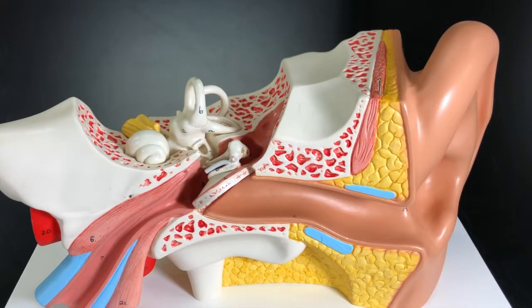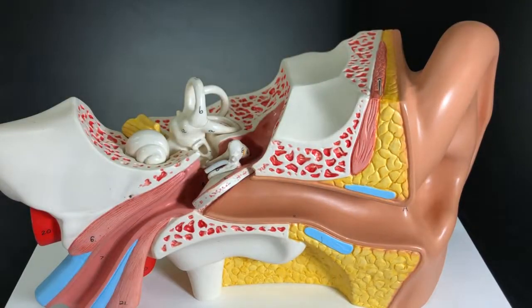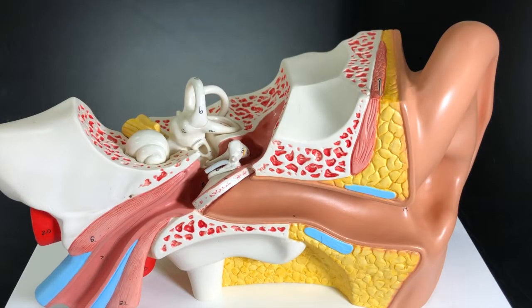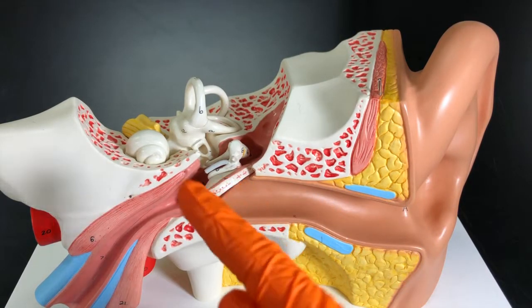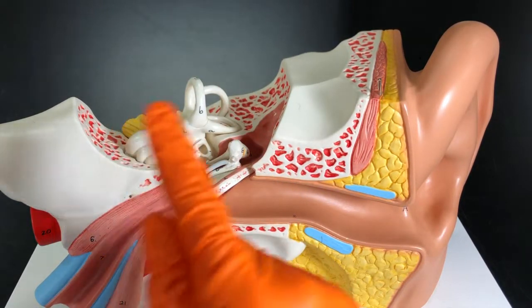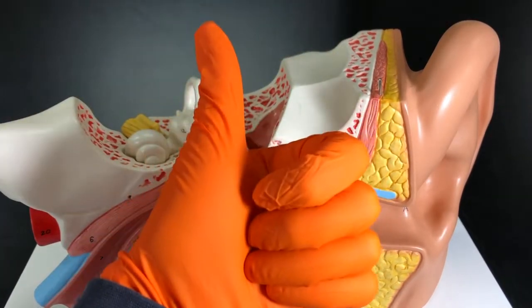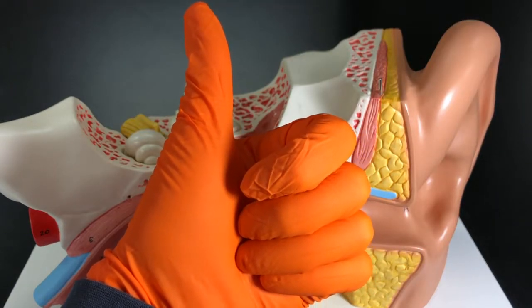My big tips for learning the anatomy of the ear are to start with those anatomic regions, and then at the very end, just like we did in this video, follow a sound wave through. It'll teach you the order, and then you will also review a lot of the structures that we covered here today. So I hope this video helps. Let me know in the comments what you thought, and I'll see you guys in the next video. Take care.